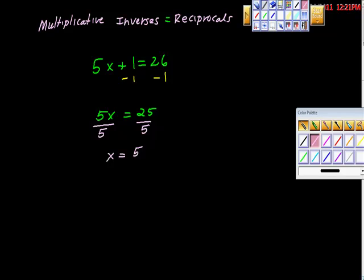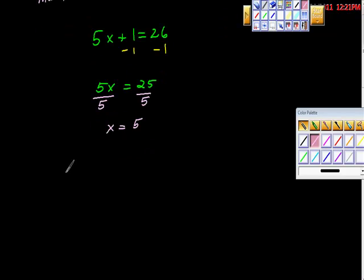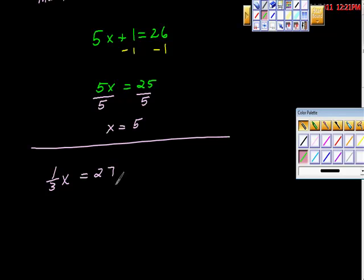But then what happens if you try to use that same rule here? In the second example, you have 1/3 x is equal to 27. So you go to 27. And then using the same logic you used last time, you say, well, let's divide it by 1/3 and divide this by 1/3.